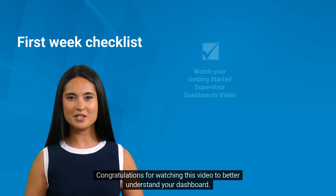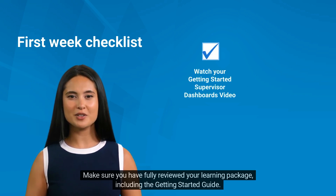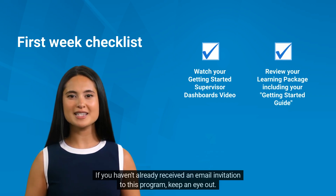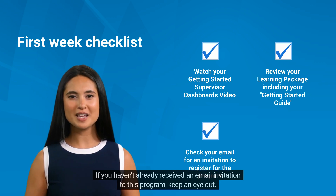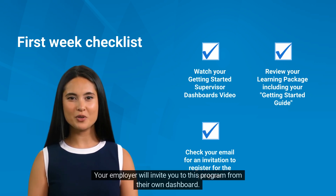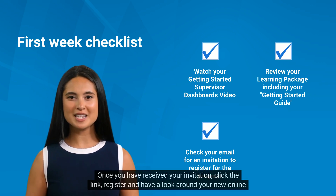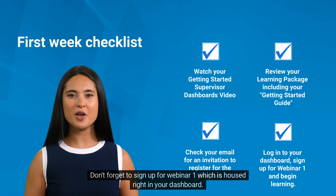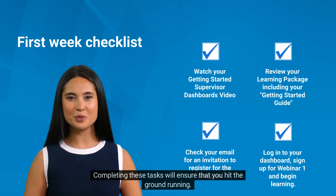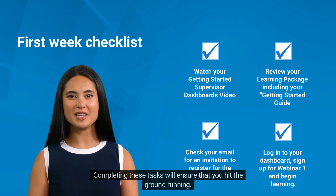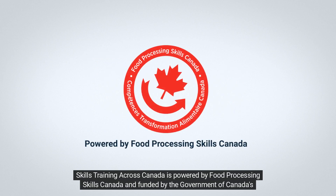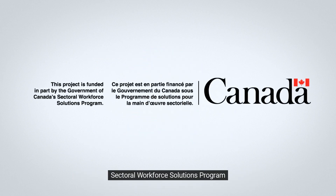Congratulations for watching this video to better understand your dashboard. Make sure you have fully reviewed your learning package, including the Getting Started Guide. If you haven't already received an email invitation to this program, keep an eye out — your employer will invite you from their own dashboard. Once you have received your invitation, click the link, register, and have a look around your new online learning platform. Don't forget to sign up for Webinar One, which is right in your dashboard. Skills Training Across Canada is powered by Food Processing Skills Canada and funded by the Government of Canada's Sectoral Workforce Solutions Program.